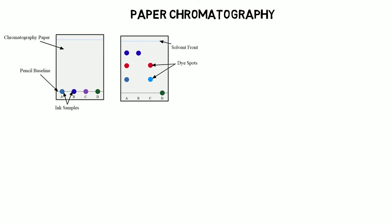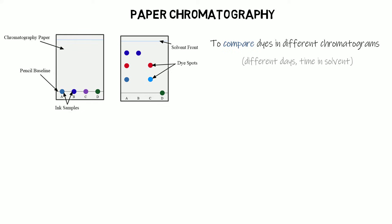A reminder of paper chromatography: we use this to separate out different dyes that form part of an ink or a food colouring, based on their solubility. Some dyes are more soluble and travel further; others are less soluble in the solvent and don't travel as far. We calculate the retention factor, or RF value, to make comparisons fair across different chromatograms done on different days or at different temperatures.